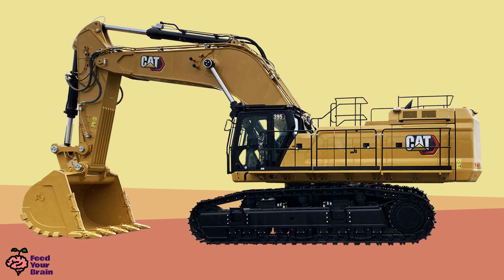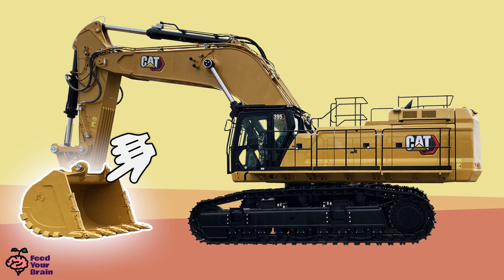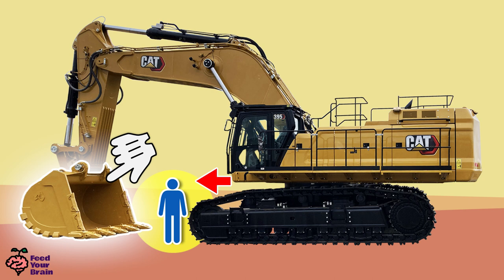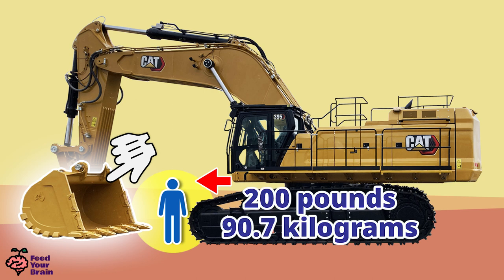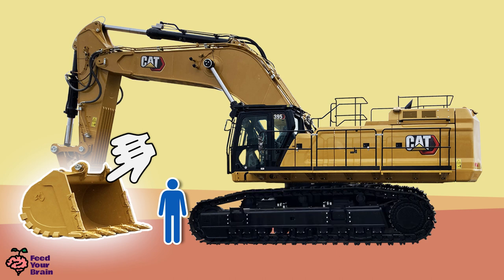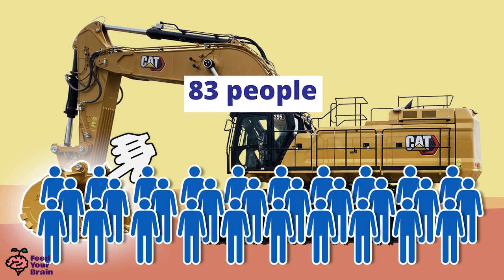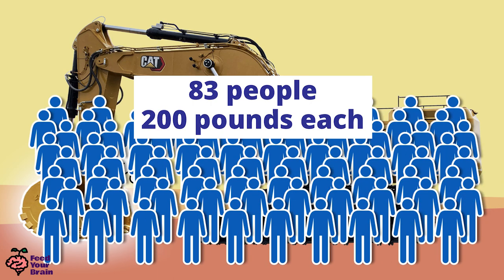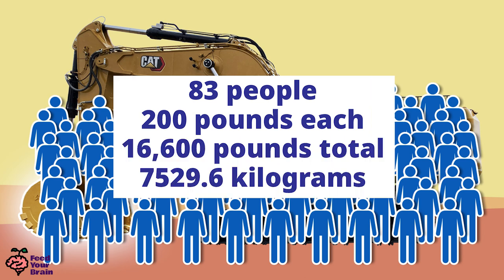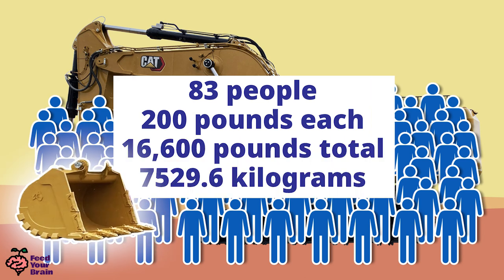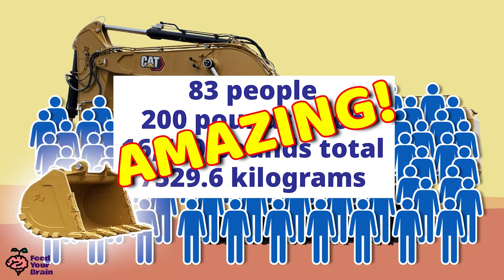Let's look at the weight of just this giant bucket. Can you guess how much just this bucket weighs? Look how huge it is compared to the height of an average-sized person. If a person weighed 200 pounds, 83 people at 200 pounds each equals a total of 16,600 pounds — that's how much this one bucket weighs. Isn't that amazing?